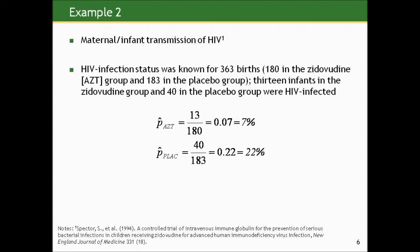Another example comes from a very famous study regarding maternal-infant transmission of HIV. The HIV infection status was known for 363 births — 103 occurring to mothers on AZT and 183 to mothers on placebo. Mothers with HIV were randomized to receive either AZT or placebo during pregnancy. 13 infants in the AZT group and 40 in the placebo group were HIV infected. The P-hat for the AZT group is 13 out of 180, or .07 — 7%. The P-hat for the placebo group is 40 out of 183, or .22 — 22%.